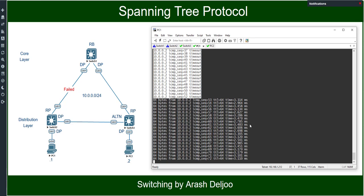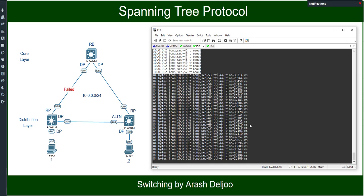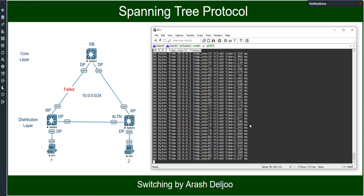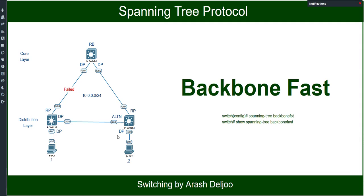Backbone Fast works by having a switch actively determine whether alternative paths exist to the root bridge when it detects an indirect link failure. An indirect link failure occurs when a link not directly connected to a switch fails. After configuring Backbone Fast, Switch3 should send some special packets — we call them RLQ or Root Link Query — from its root port toward the root bridge Switch1. We want to reduce the convergence time from 50 seconds to 30 seconds with the help of Backbone Fast.